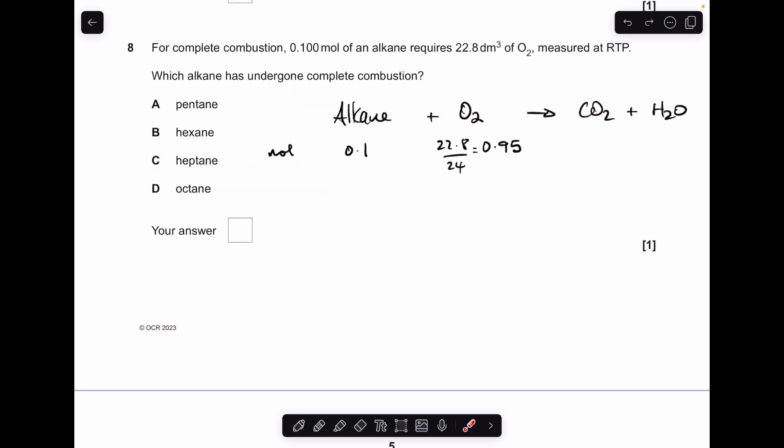Moving on, number eight. I've come up with a very simple way of representing the complete combustion of an alkane. So alkanes react with oxygen and form CO2 and H2O. We've got the moles of the alkane and we've effectively got the moles of O2. We just need to do the volume in decimeters cubed divided by 24, the molar gas volume. So we can see that 0.1 moles of the alkane reacts with 0.95 moles of oxygen. So if we turn that into a 1 to something ratio, that means it's 1 to 9.5.